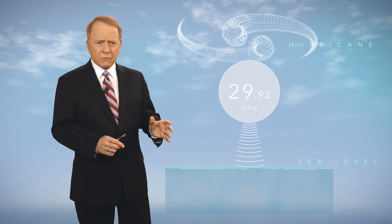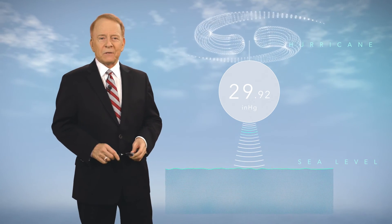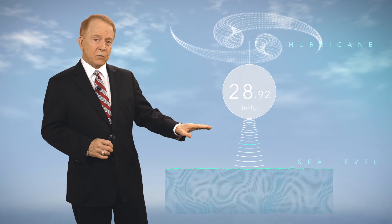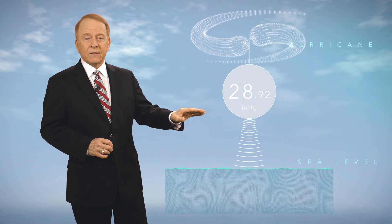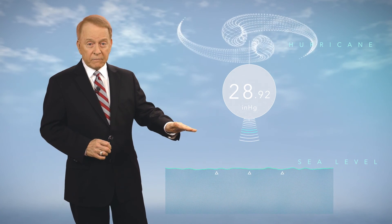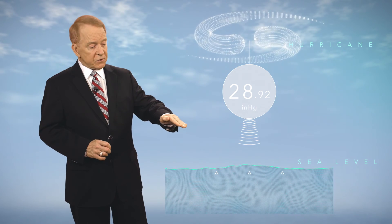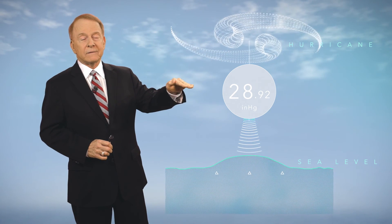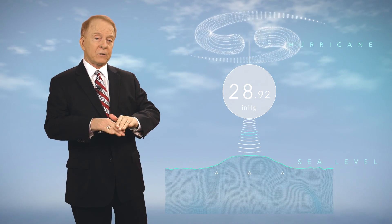Consider a tropical disturbance intensifying with a central pressure of 29.92 inches of mercury — that is the weight of the atmosphere above a certain point. If the storm intensifies and it drops an inch to 28.92, there's less pressure on the water. So what happens? The surface of the ocean rises. It's quite amazing: one inch of mercury represents one foot of rise in the ocean.